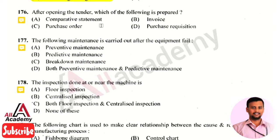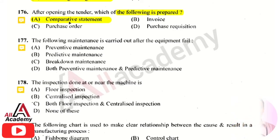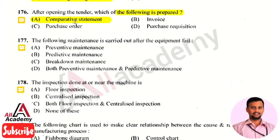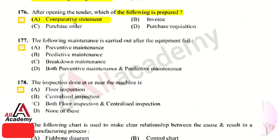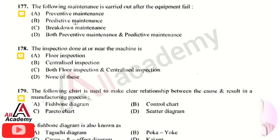The next question is: after opening the tender, which of the following is prepared? The right answer is option 1, a comparative statement. A comparative statement is a financial document used for comparing different tenders that have been quoted for a particular function or operation. It gives a clear picture of various quoted tenders for the same operation, helping to identify the best tender.